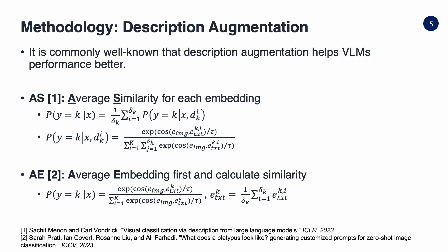Moreover, there is a well-known technique called description augmentation, commonly used in vision language models to improve performance. There are two representative methods of description augmentation. The first one is AS, which calculates the average similarity of each description text embedding. The second one is AE, which first calculates the average description text embedding in a class-wise manner and then calculates similarity using the averaged embedding. We will show the performance comparison between AS and AE in the results section.